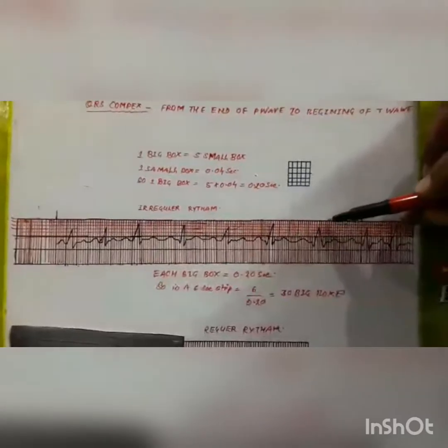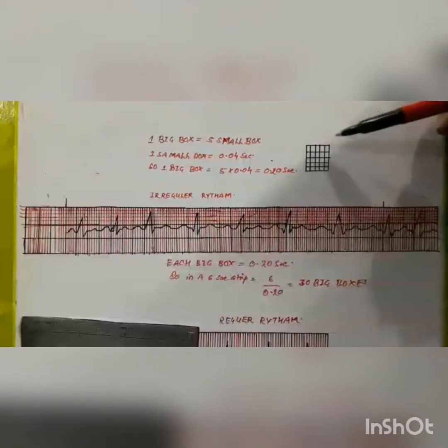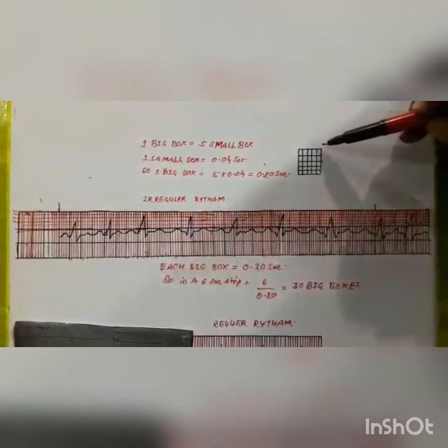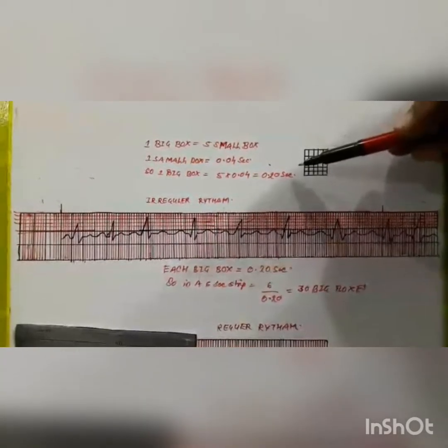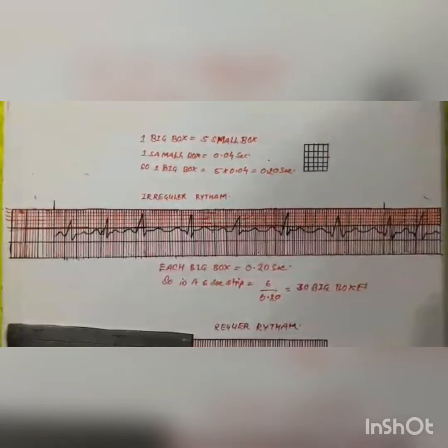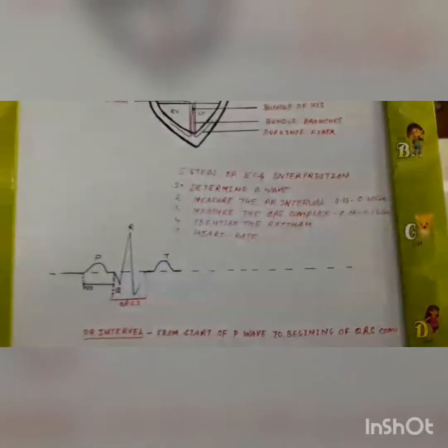We will talk about how to interpret an EKG in five steps. But first, let me explain the basic structure of an EKG strip. In an EKG strip, there are big boxes. This is an enlarged diagram of one big box. In one big box, there are five small boxes, and each small box represents 0.04 seconds. So one big box equals 0.04 × 5, which equals 0.20 seconds — meaning one big box represents 0.20 seconds.